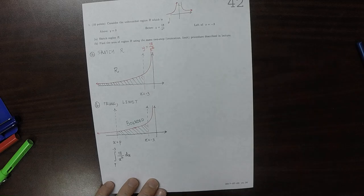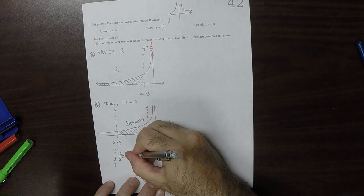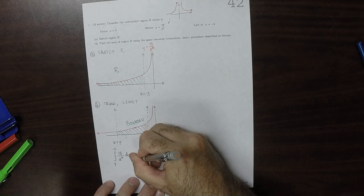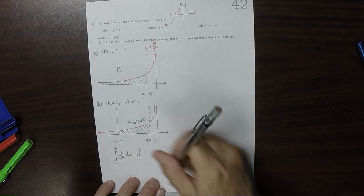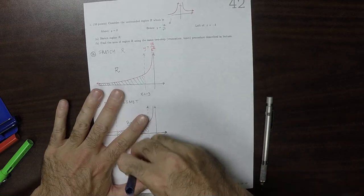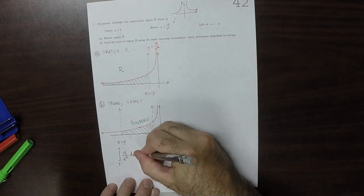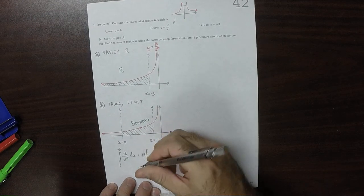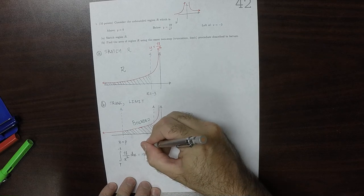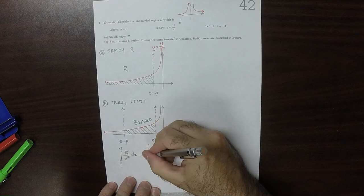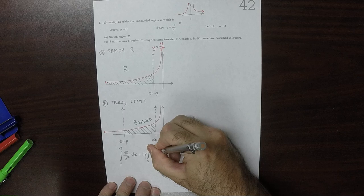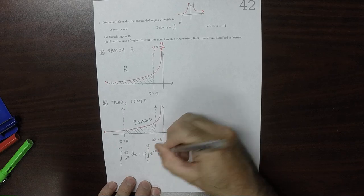Well, that would be integral. I'll factor out the 18 so that it looks like 18 integral P to negative 3, factor out the 18. And then I'll write that as x to negative 2 dx.